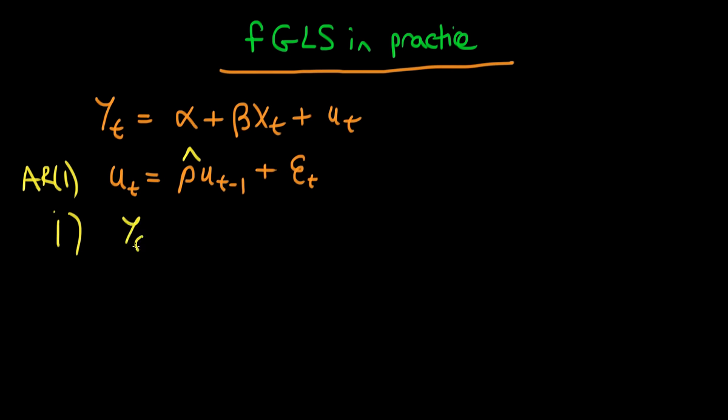So the idea is that the first regression we run is just our primary model, so that's Yt equals alpha plus beta Xt plus Ut, and the idea here is that we use our OLS estimates of alpha hat and beta hat and then that yields us our residuals which we call Ut hat.